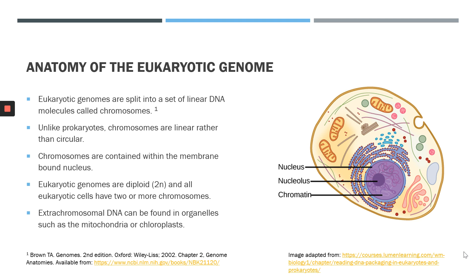Eukaryotic genomes are split into a set of linear DNA molecules called chromosomes. If you remember from the previous lecture, we spoke about prokaryotes having a single circular DNA chromosome. However, in eukaryotes, chromosomes are linear rather than circular. Eukaryotes also have a minimum of at least two linear chromosomes. These chromosomes are contained within a membrane-bound organelle called the nucleus.